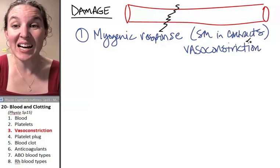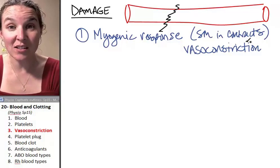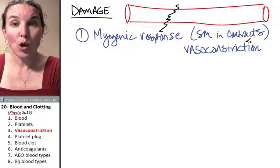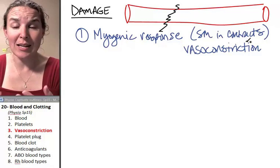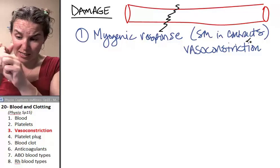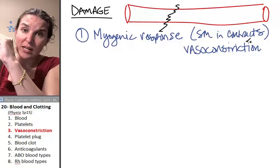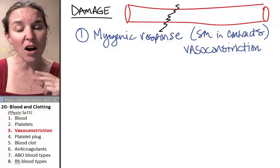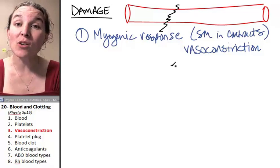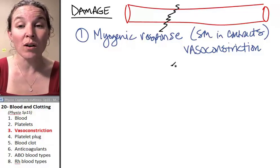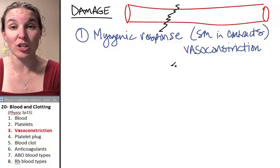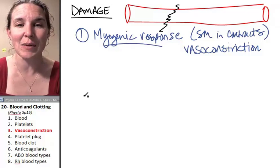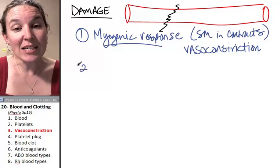This happens because damaged blood vessel cells produce chemicals that say, let's contract, let's constrict, let's vasoconstrict. And it's automatic. And the bigger the blood vessel, the more vasoconstriction that happens because of this mechanism.